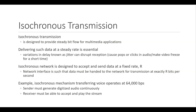An isochronous network is designed to accept and send data at a fixed rate R, such that data must be handed to the network for transmission at exactly R bits per second. An example of an isochronous mechanism for voice operates at 64,000 bits per second — the sender must generate digitized audio continuously and the receiver must accept and play the stream at that rate. Multimedia streams require an isochronous transport mechanism to ensure data is delivered as fast as it is displayed and that audio is synchronized with video.